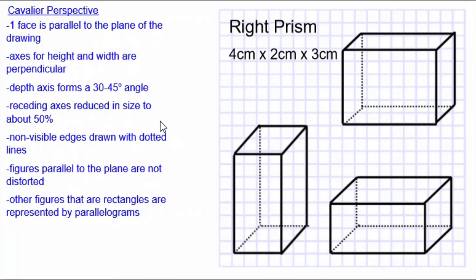The receding axes are reduced in size to about 50%. So in this one, the receding axis is the three centimetre dimension, and it's represented with one and a half centimetres. Here, the receding axis is the two centimetre dimension and is represented by a one centimetre line. And here, the receding axis is again three centimetres and is represented by a one and a half centimetre line.